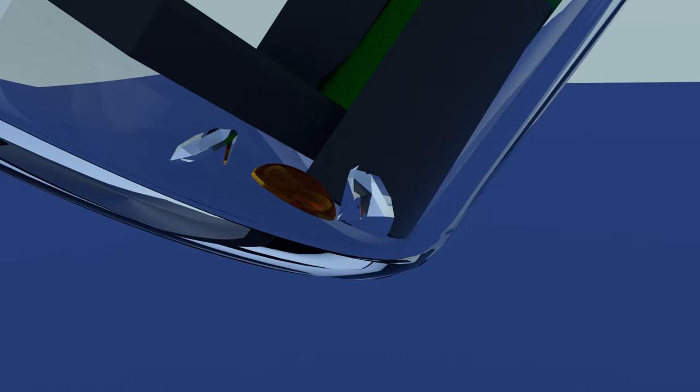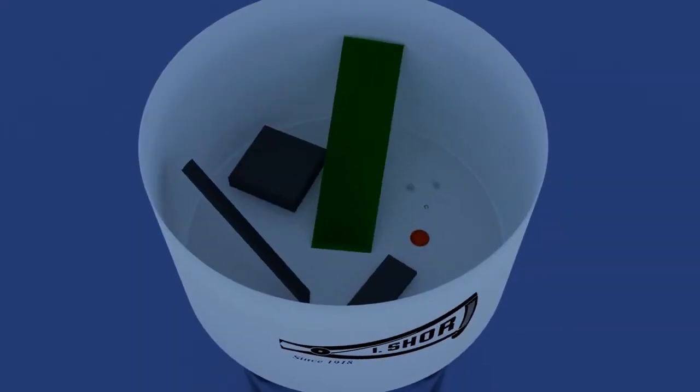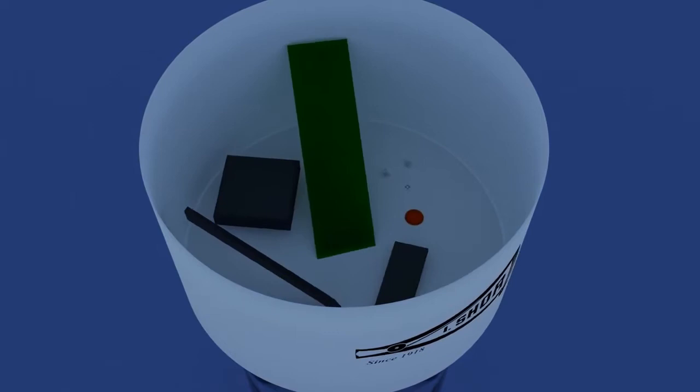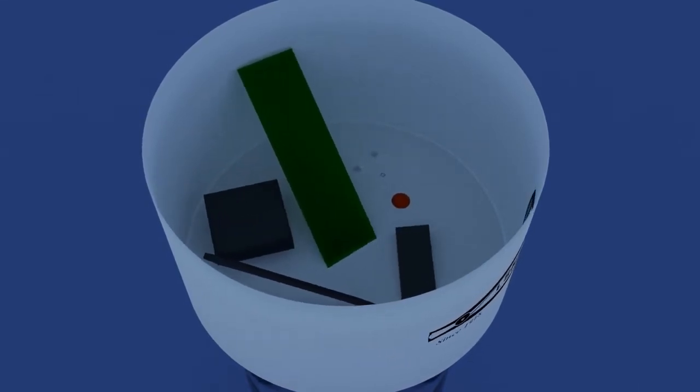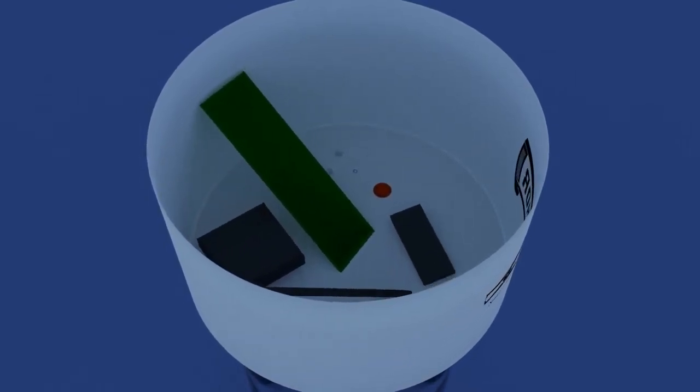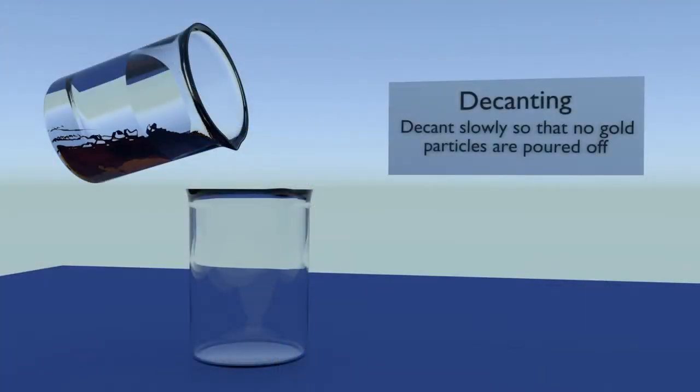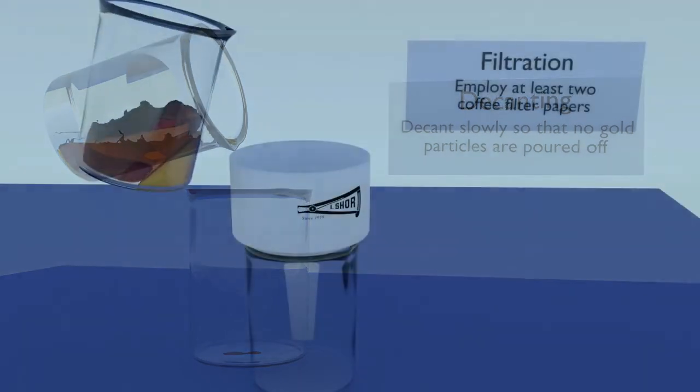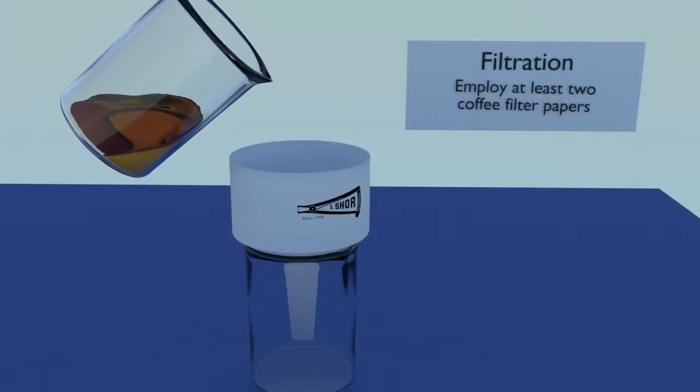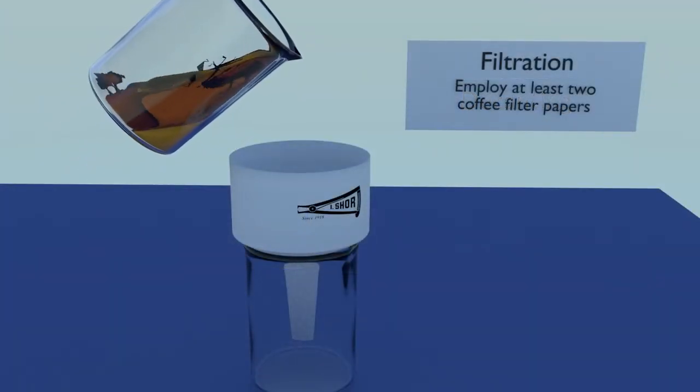Since those materials would contaminate the gold that you will be retrieving from the solution, you need to extract those materials from the solution before precipitating the gold. This is easily done by either decanting or filtering the solution. Decanting is carefully pouring the solution off the top till the beaker is empty of solution. If you prefer to filter, use a Buchner filter funnel and use two coffee filters.